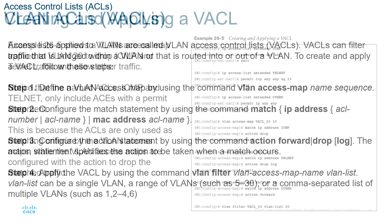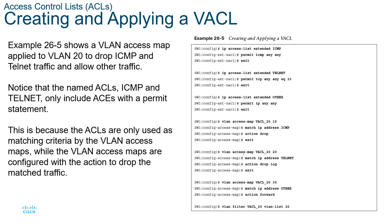To configure VACLs on a switch: set up named IP access lists, then create the access map with 'vlan access-map [name] [sequence]'. Configure match and action statements — for example, matching ICMP with 'action drop', matching Telnet with 'action drop log', and for other protocols 'action forward'. This demonstrates how VACLs are actually configured step by step.